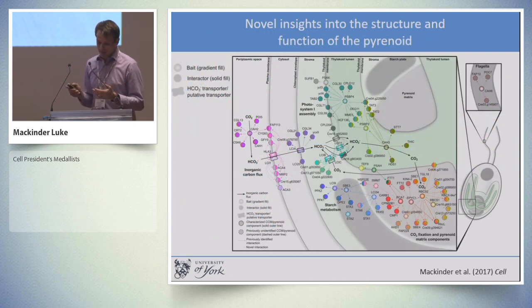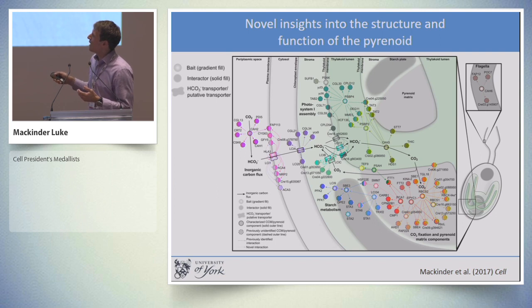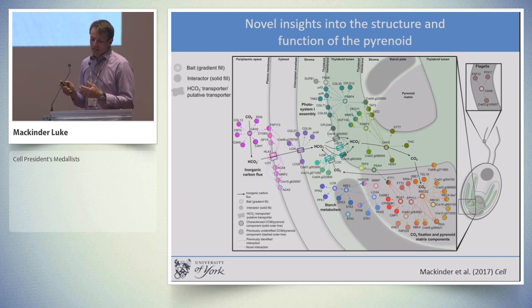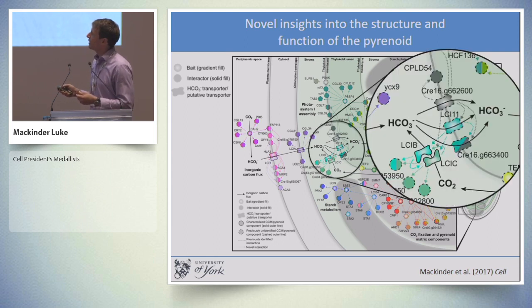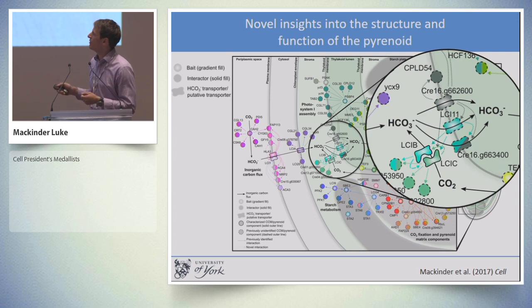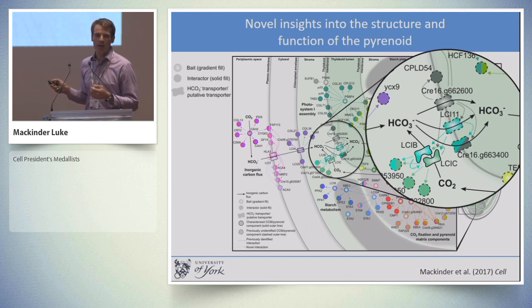This is the interactome we generated — a pyrenoid with different membrane layers and the external environment, where each protein is represented by a dot and each interaction by a line. We're now systematically characterizing all these different interactors and finding novel insights into CO2 fixation. For example, there was a missing step in inorganic carbon transport from the external environment into the pyrenoid, and through our interaction data we now have three potential bicarbonate transporters filling in this missing step.